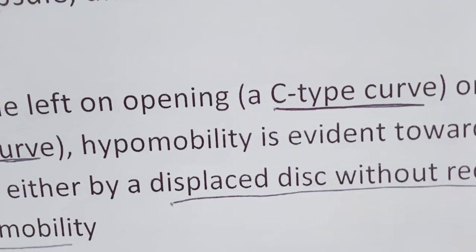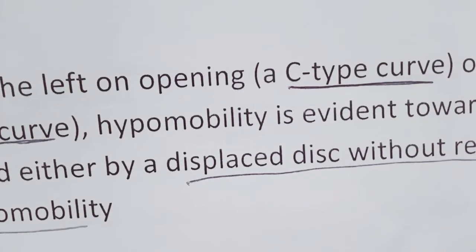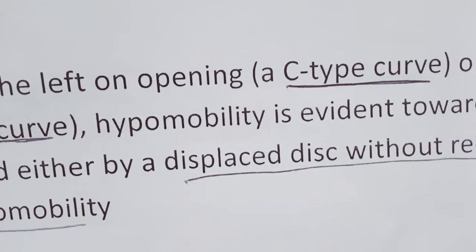Joint mobilization for restriction in the TMJ: primary glide is inferior. Gapping of the joint stretches the capsule and allows relocation of the anteriorly displaced disc.